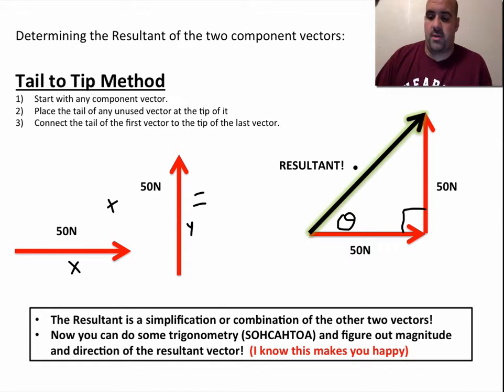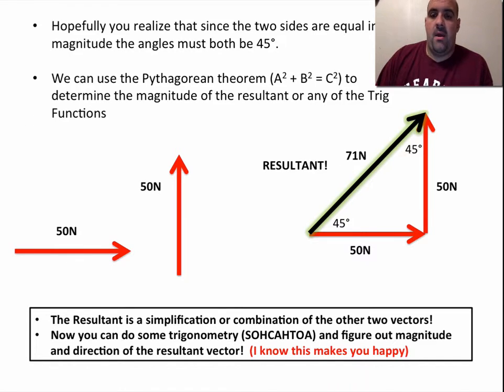Once you get this angle, there's a number of methods you can use besides the Pythagorean theorem to figure out the resultant. You end up with 71 newtons, and hopefully you realize that these sides are equal. Since these sides are equal, these angles must be equal. This is 90, and it's got to add up to 180. That one was sort of a gimme, but the resultant, you could have used Pythagorean theorem or any number of the SOHCAHTOA trig functions once you have the angles in.